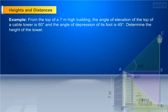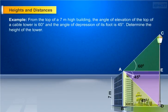Example: From the top of a 7-meters high building, the angle of elevation of the top of a cable tower is 60 degrees, and the angle of depression of its foot is 45 degrees. Determine the height of the tower.